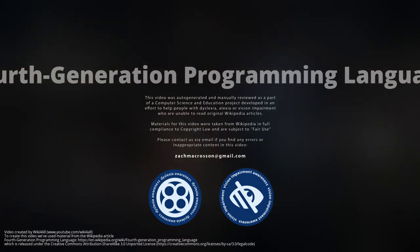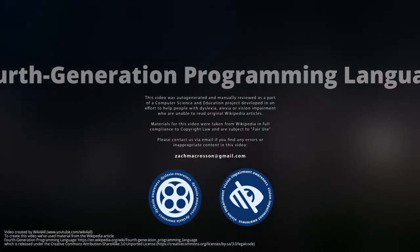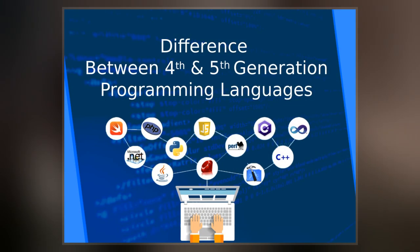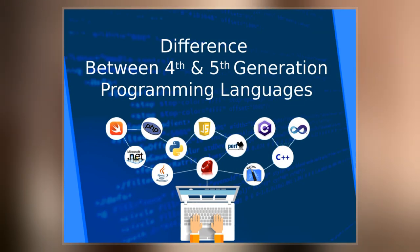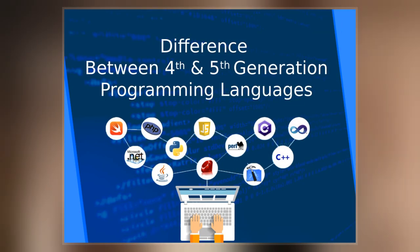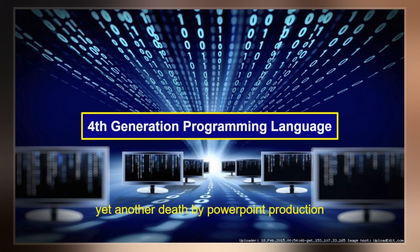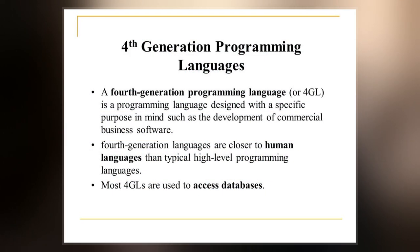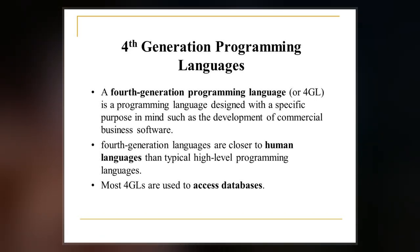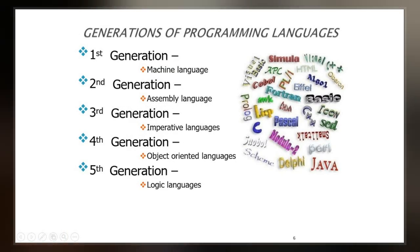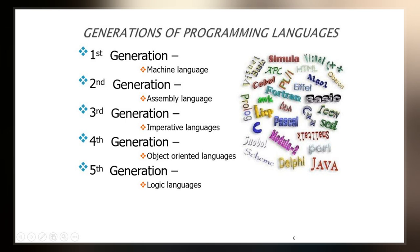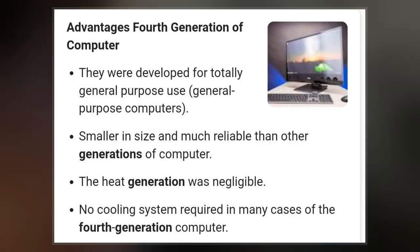The fourth-generation programming language is any computer programming language that belongs to a class of languages envisioned as an advancement upon third-generation programming languages. Each of the programming language generations aims to provide a higher level of abstraction of the internal computer hardware details, making the language more programmer-friendly, powerful, and versatile. While the definition of 4GL has changed over time, it can be typified by operating more with large collections of information at once, rather than focusing on just bits and bytes.